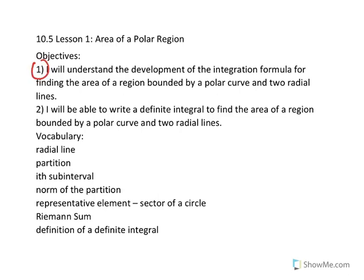For objective 1, how do we develop the integration formula for finding the area of a region bounded by a curve and two radial lines? The development process is the same for any integration formula. You begin with an approximation, you write a Riemann sum to represent your approximation, and then you take the limit of your Riemann sum as the norm of the partition approaches zero, and that will give you a definite integral by definition. So in step 1, you're using a pre-calculus formula.